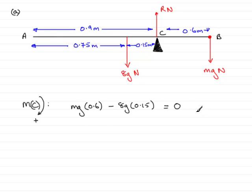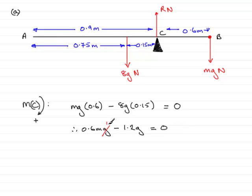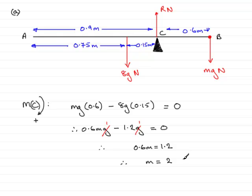All that's left is to solve this. We have 0.6mg minus 1.2g equals 0. Notice I don't evaluate g because it appears in each term — we can divide through by g and it cancels out. Rearranging: add 1.2 to both sides gives 0.6m equals 1.2. Dividing both sides by 0.6 gives m equals 1.2 divided by 0.6, which equals 2. That brings us to the end of part A.